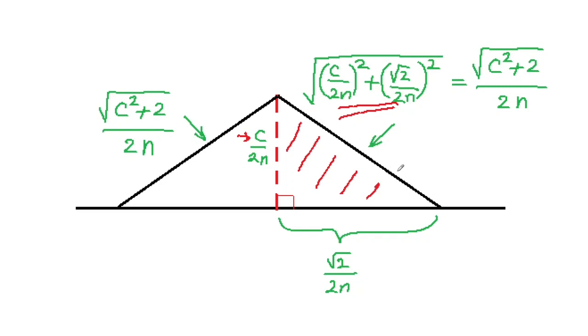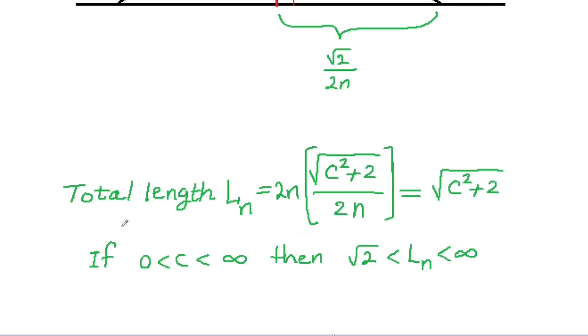So each of the two segments that are part of the path have this length, have the same length that you see here. The total length of the path, let's call it l_n in stage n, is the length of each segment that we just calculated, times the total number of segments, 2 segments per triangle or bump, times n bumps. And now I get a simplification by canceling the 2n's. And we notice that the length of the zigzag path in stage n doesn't depend on n. It's just a constant number here. So it's the same for every n.